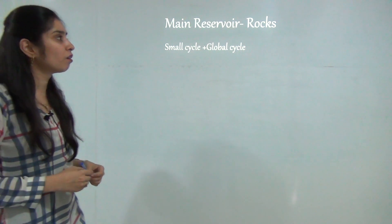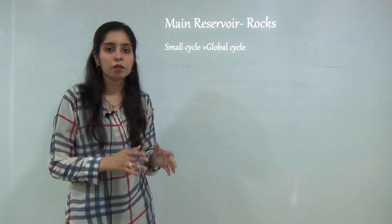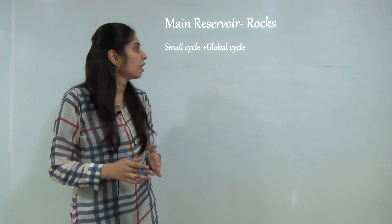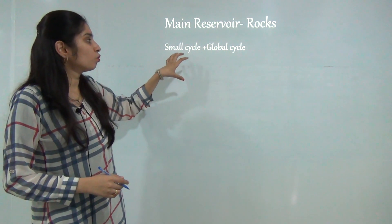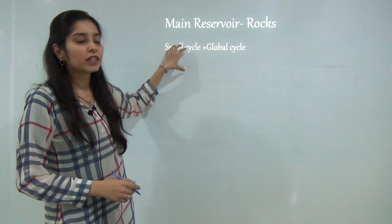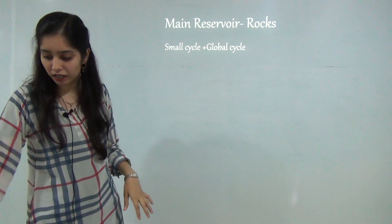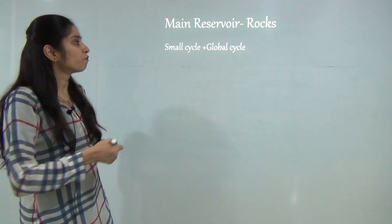The main reservoir of phosphorus is rocks. It is mainly present in rocks in the layer. It can be divided into two cycles: one cycle is called a small cycle and second is called the global cycle.